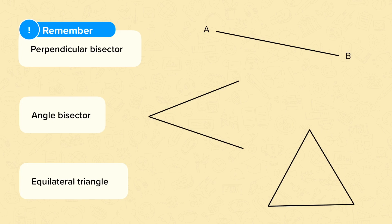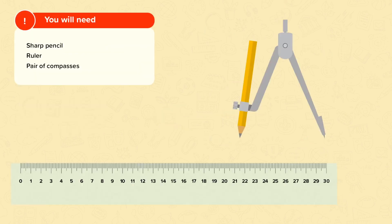The skills you'll need for this video are: to construct a perpendicular bisector, to construct an angle bisector — that's when you're cutting a given angle in half — and also to construct an equilateral triangle, which is a triangle with all three sides equal and all three angles equal. For this video, you won't be using a protractor, but you will need a sharp pencil, a ruler, and a pair of compasses.